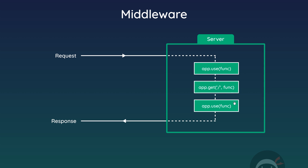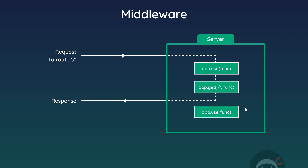Middleware runs from top to bottom in our code, and it runs that way until we exit the process or explicitly send a response to the browser. For example, a request comes in to forward slash, the first use middleware fires, then the get handler matches that route and fires as well. Inside that function we send a response, so no other middleware beyond that point is executed. The order of middleware is therefore very important.